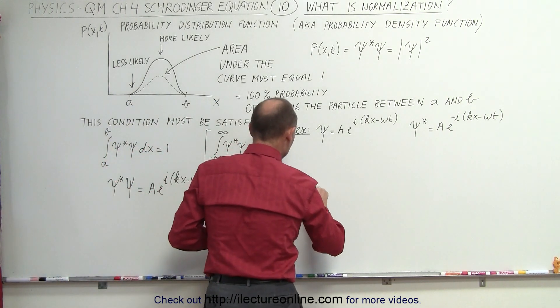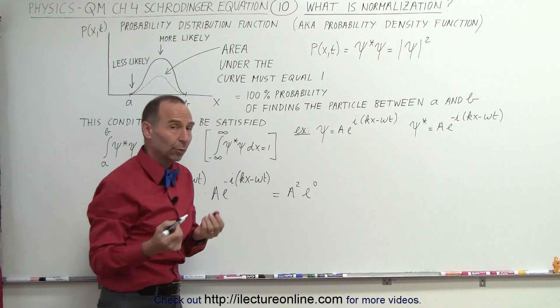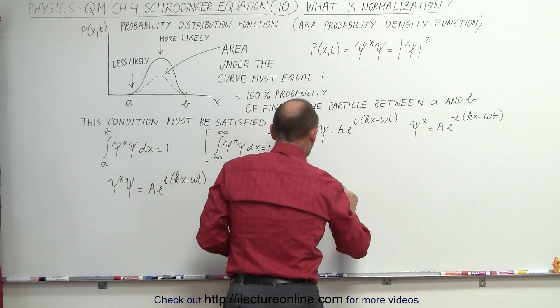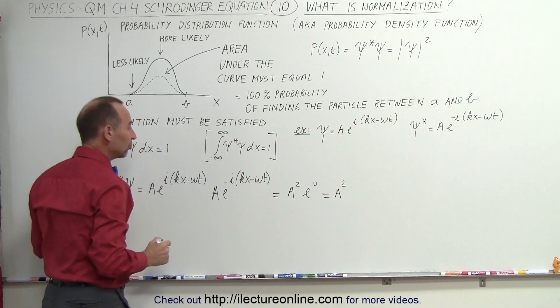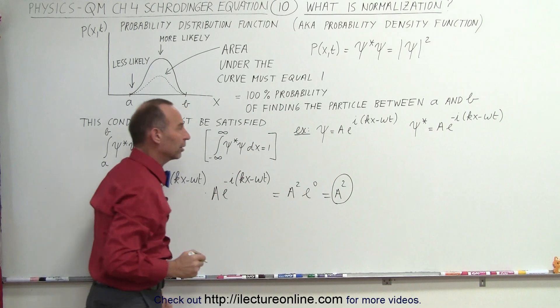This is the positive, this is the negative. Add them together, you get zero. So this ends up being e to the zero, which of course is equal to one. Which means that the product of those two, the product of the wave function and its complex conjugate, is actually equal to a squared.